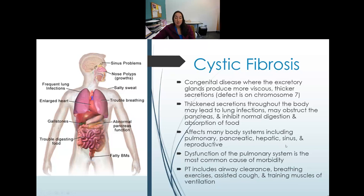The most common cause of morbidity in cystic fibrosis is damage to the pulmonary system — lungs progressively fill with fluid. Life expectancy has improved significantly with newer medications. PT can include airway clearance techniques, breathing exercises, assisted cough, and training of the muscles of ventilation.